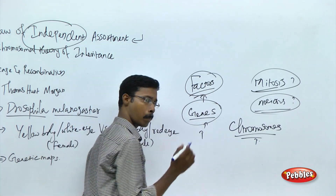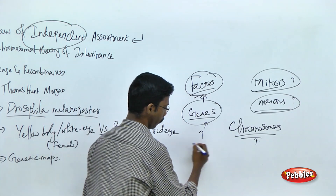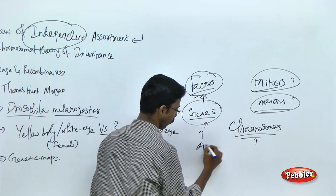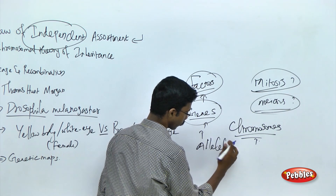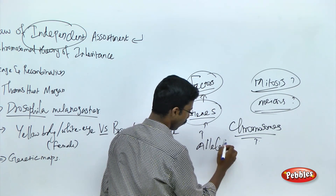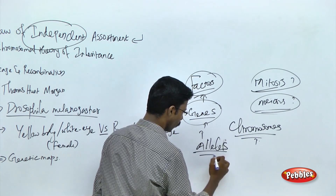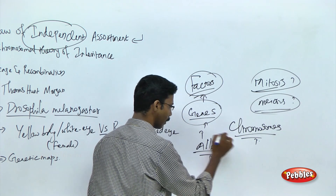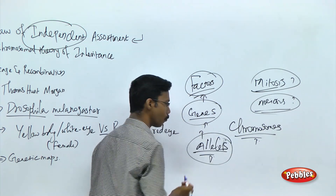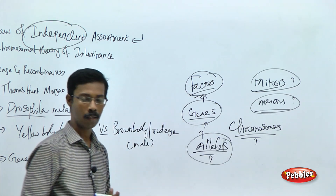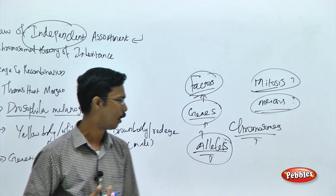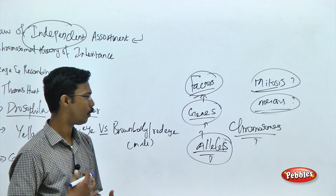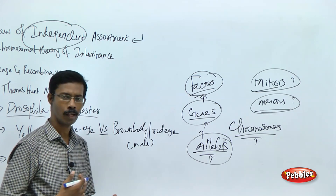In the Mendelian period, nobody knew the term 'genes.' According to Mendel, characters were carried by factors. After some years, scientists found out that genes carry the information for the character or phenotype of a particular living species. So Mendel's factors are nothing but genes. Genes carry the characters and form the phenotypic expression of a particular animal. Another important term from Mendel is alleles.